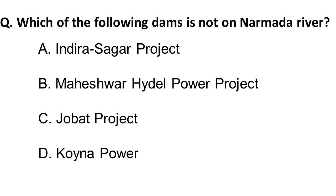The Koyna Power Project is on the Koyna River, as the name itself suggests. So the answer is that the Koyna Project is not on the Narmada River — it is on the Koyna River.